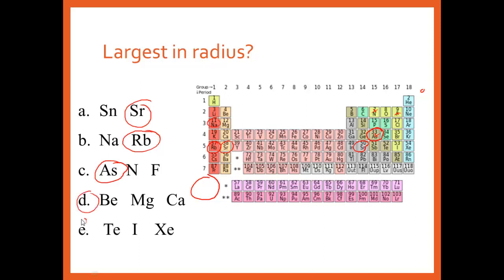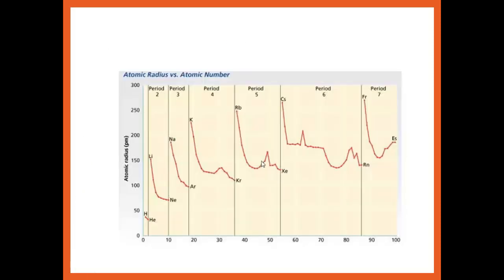I'm going to leave you D and E to work on, and we can start with those tomorrow. But we're not done with the podcast, so don't shut me down yet. This graph should look familiar — it looks similar to the graphs that you made. Going down a group, they get bigger; going across a period, they're getting smaller, and that's what you should have recognized when you were looking at it.